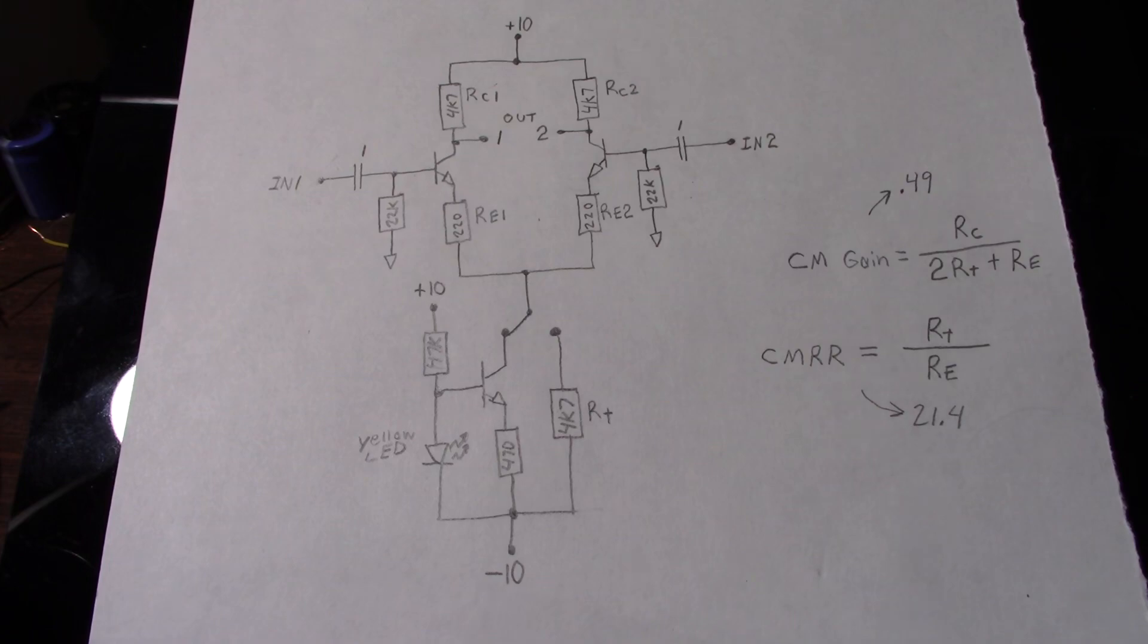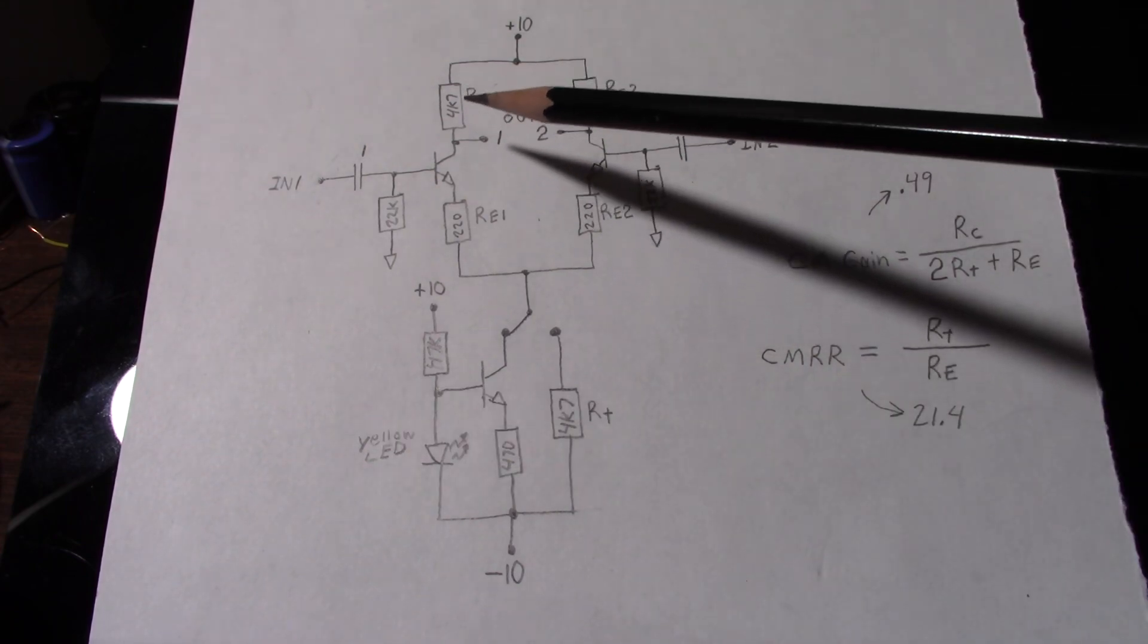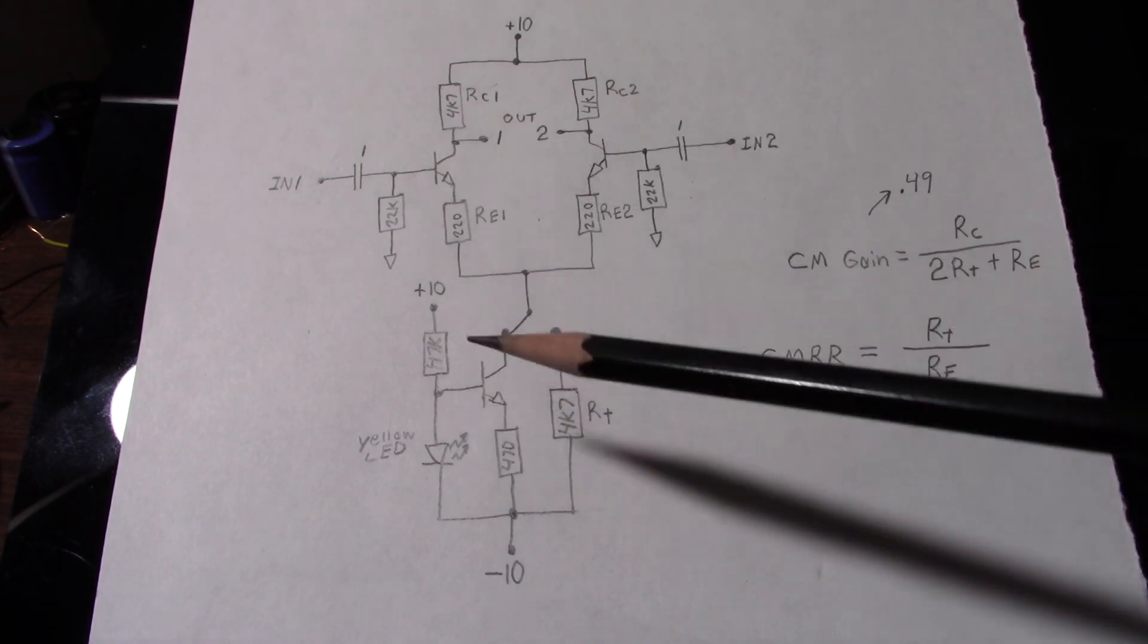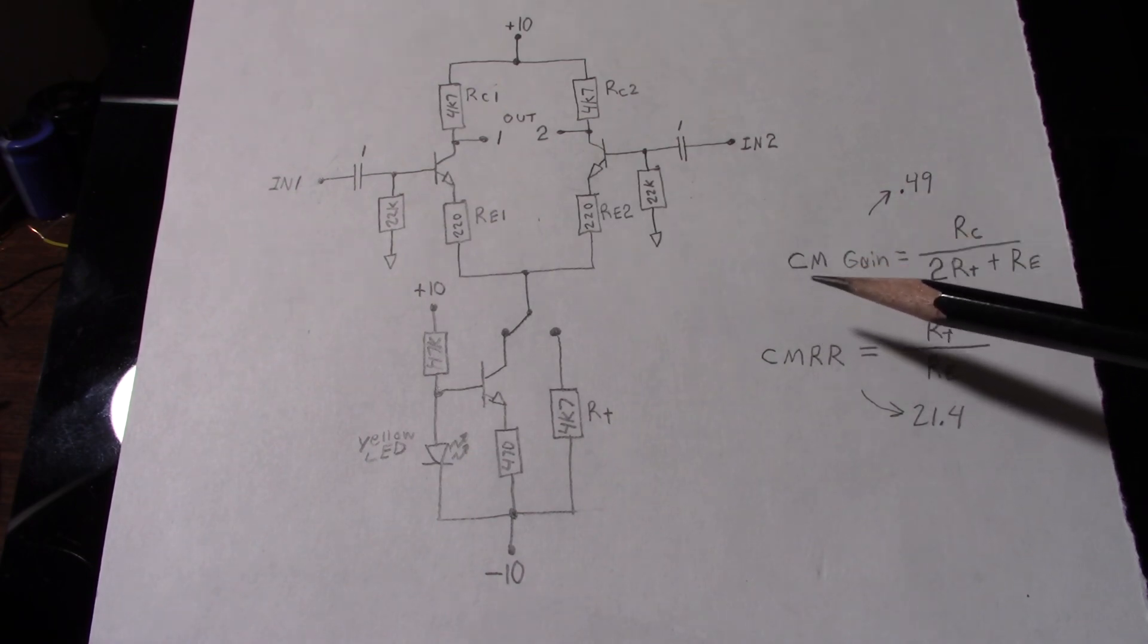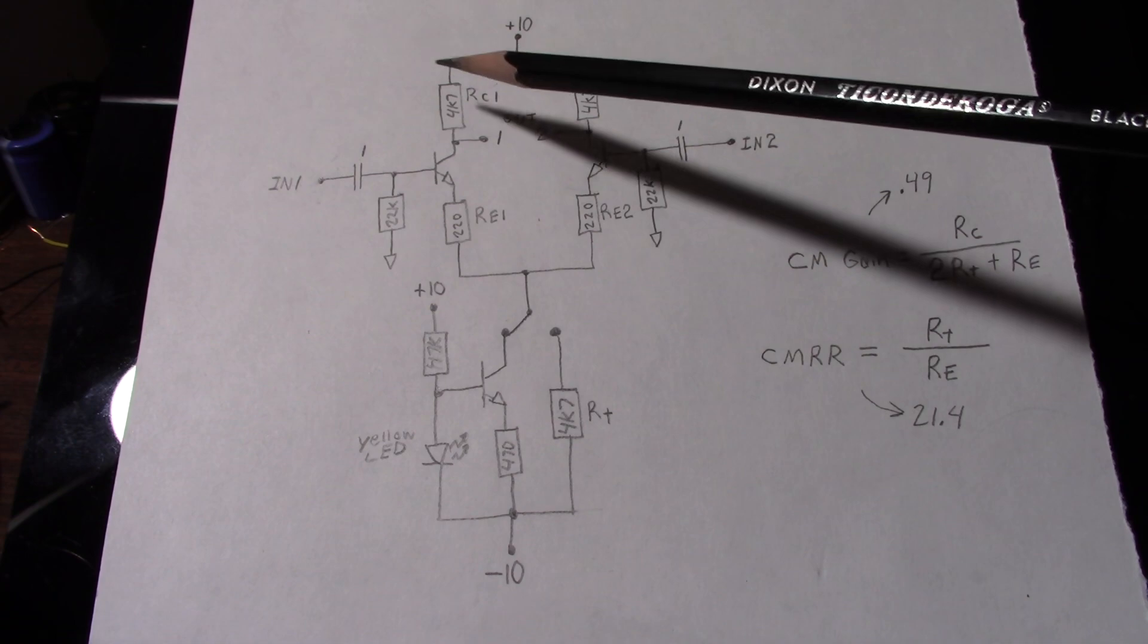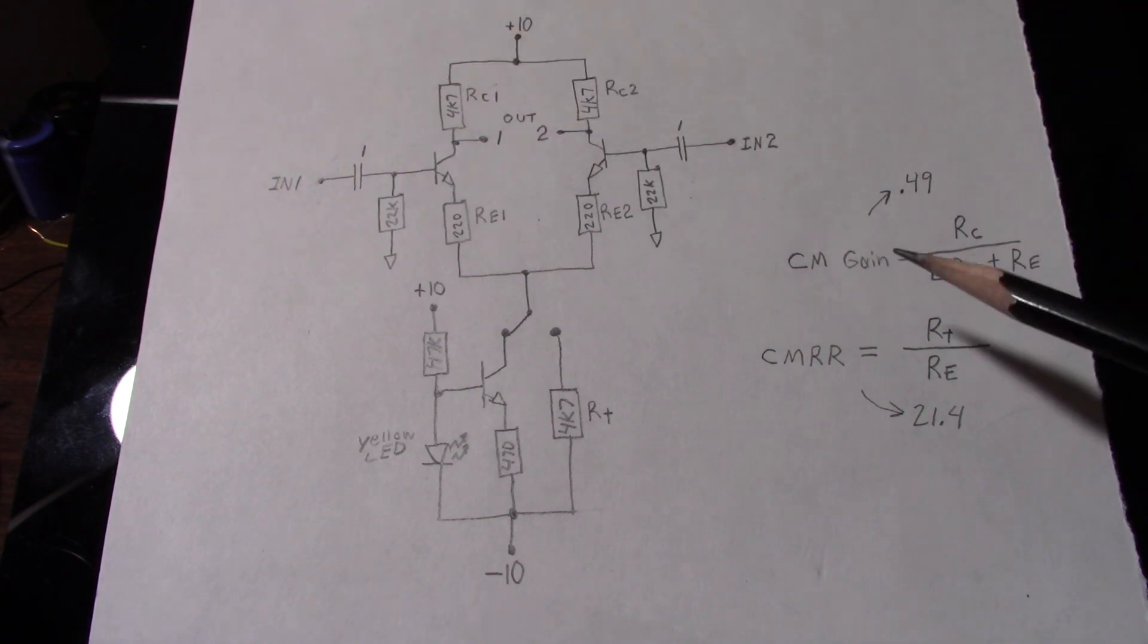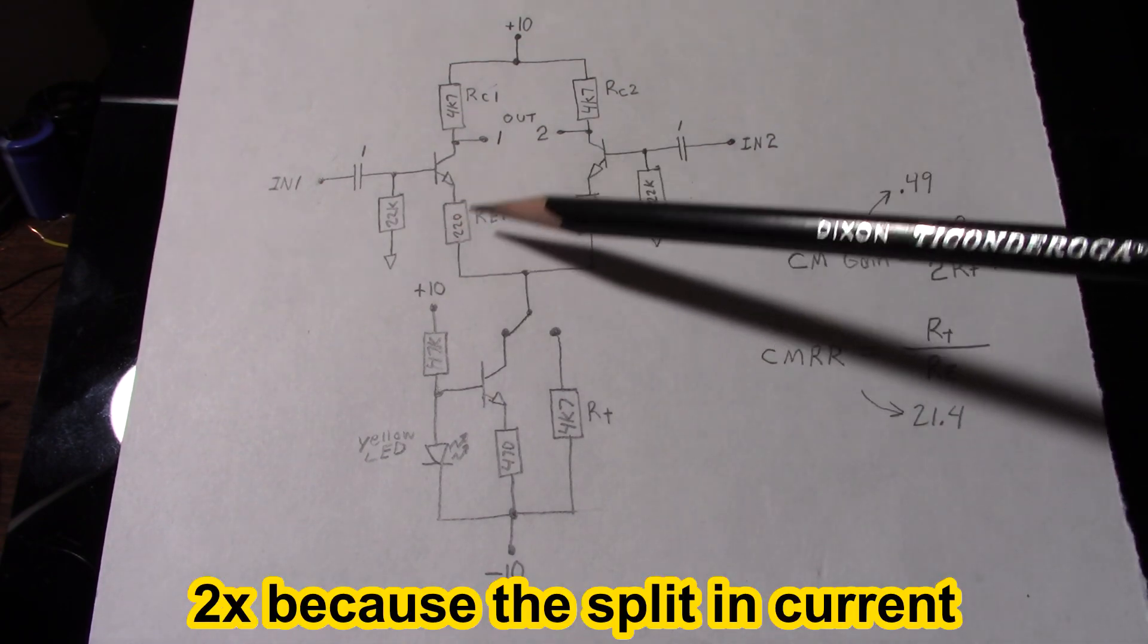Now if you follow my channel, about a month or so ago I did a video about how to set up a common emitter amplifier with voltage divider bias. And the gain of that circuit is roughly the collector resistance divided by the emitter resistance. Well, if you look at the differential amplifier circuit here, the common mode gain is really that same formula. It's just that we have a little bit more going on in the emitter circuit.